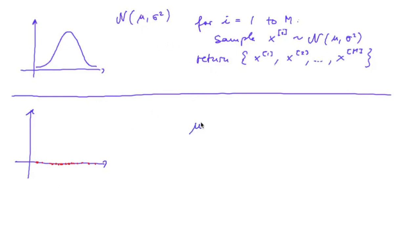So our estimated mu will be 1 divided by m times the sum of all samples. So this is the mean value. And the estimation for our variance would be 1 divided by m minus 1 times the sum of x minus the estimated mean squared.